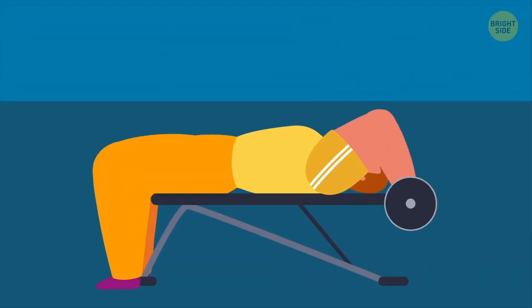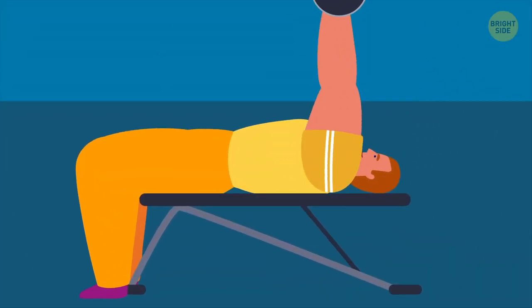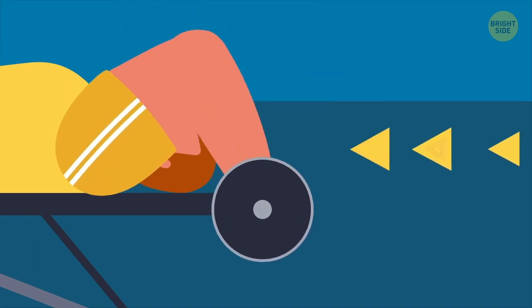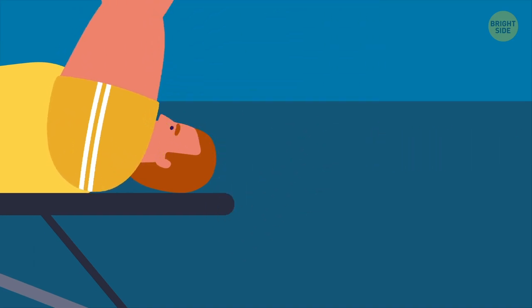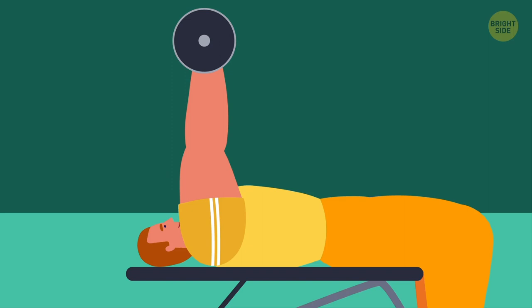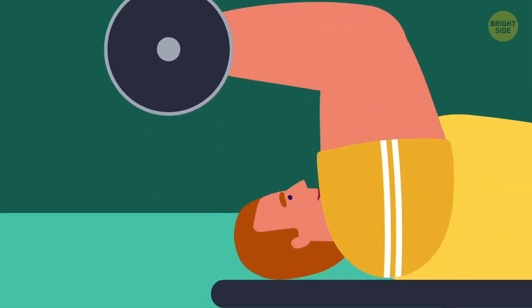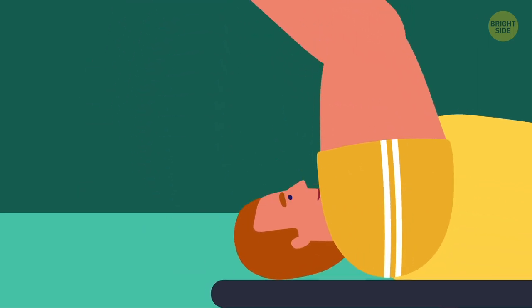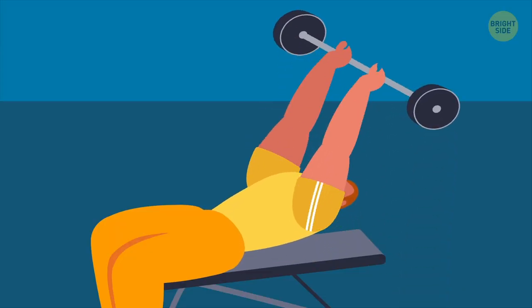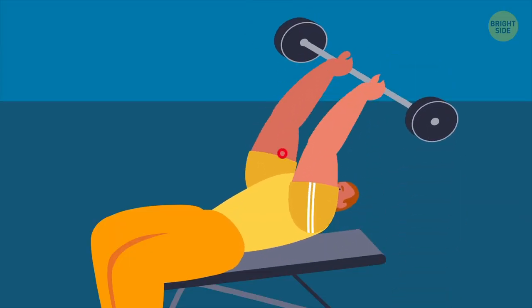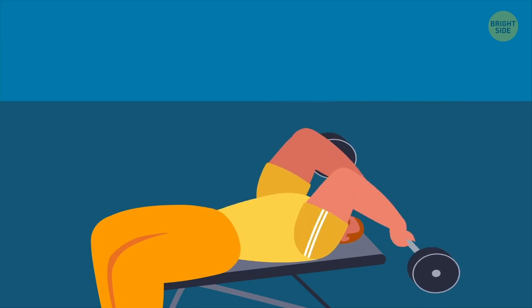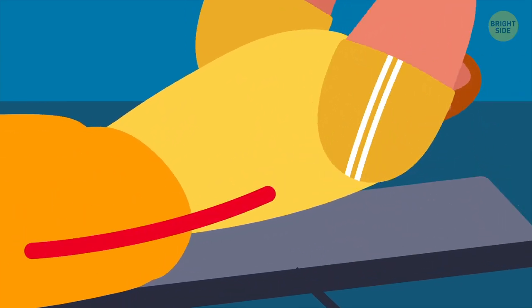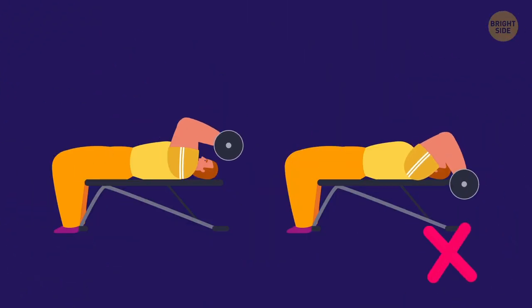The most common mistake with skull crushers is swinging the bar up behind the head. Your elbows and shoulders shouldn't move, and the bar should stop right above your forehead, hence the name of the exercise. If you're swinging your shoulders or spreading your elbows, it takes the work off the triceps, defeating the whole purpose. And don't curve your back too much – it should remain in its neutral position.